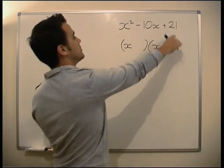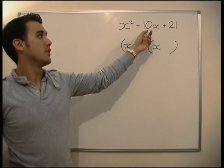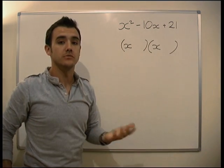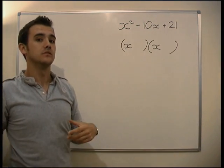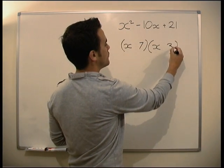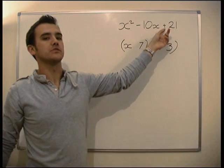Same deal. Let's draw brackets with our x's in. We need two numbers that times together to make 21, either add together or have a difference to make 10. So I can only think of two numbers that times together to make 21 - a 7 and a 3. So let's pop them in, we need a 7, we need a 3.